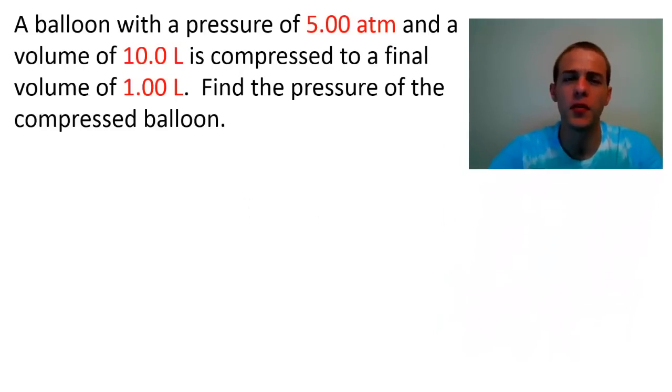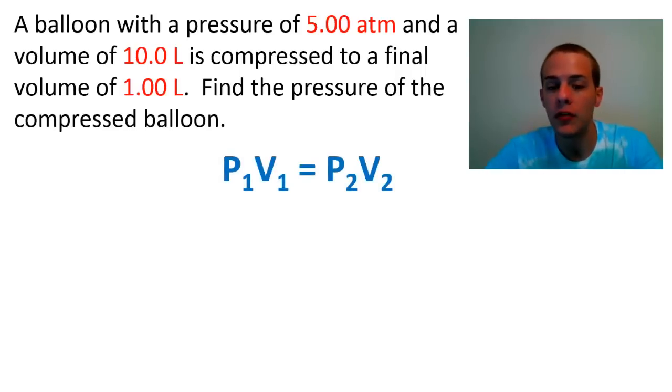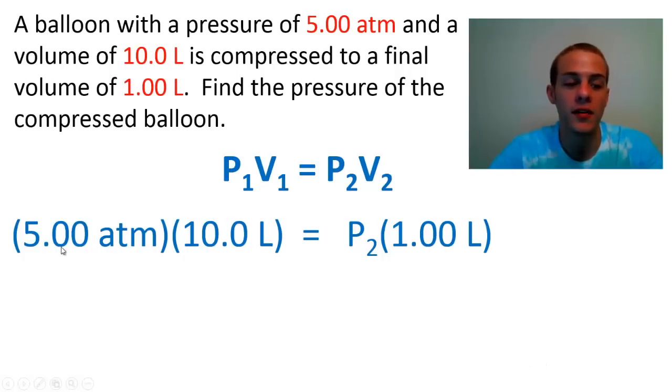So let's go into a problem real quick. It says that we have a balloon, and that balloon has a pressure of 5.00 atmospheres, and it's got a volume of 10.0 liters. And what happens is that balloon is compressed to a final volume of 1.00 liters, and we're asked to find the pressure of that compressed balloon. So we're going to use our P1 V1 equals P2 V2. We're going to assume that state 1 is that expanded state where we have a big volume of 10 liters and a pressure of 5.00 atmospheres. So that means that the product of 5.00 atmospheres and 10.0 liters is going to be equal to the product of the pressure at that compressed state times that new volume, which is 1.00 liters.